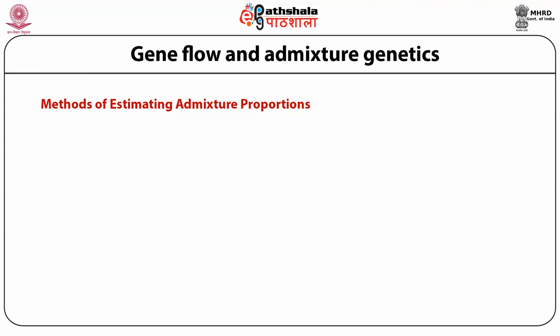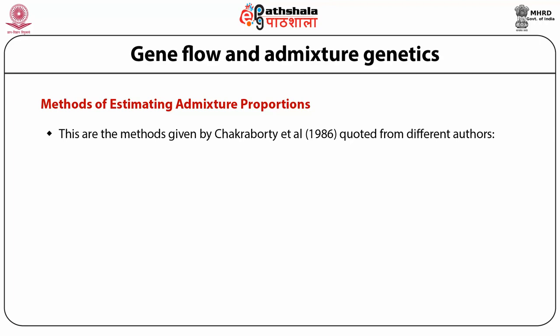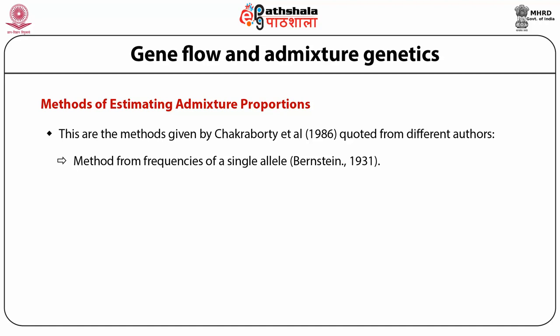Now let's come to the methods of estimating admixture proportions. A wide variety of methods have been proposed utilizing data of various kinds. The first is the method from frequencies of a single allele, given by Bernstein. He was the first to use allele frequency data in hybrid and parental populations to estimate the proportional contribution of the ancestral stock in the hybrid population.